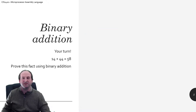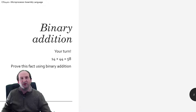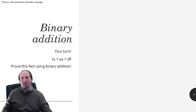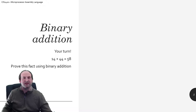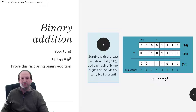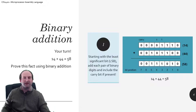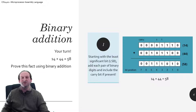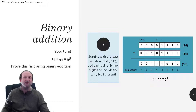Now it's your turn. Try to add 14 plus 44 to get 58 using nothing but binary. If you don't know how yet, just watch along and get a feel for what's happening, because future videos will show you how to do this in both signed and unsigned formats. Here is the solution: 14 in binary is 00001110, and 44 in binary is 00101100 — keeping everything in 8-bit format.